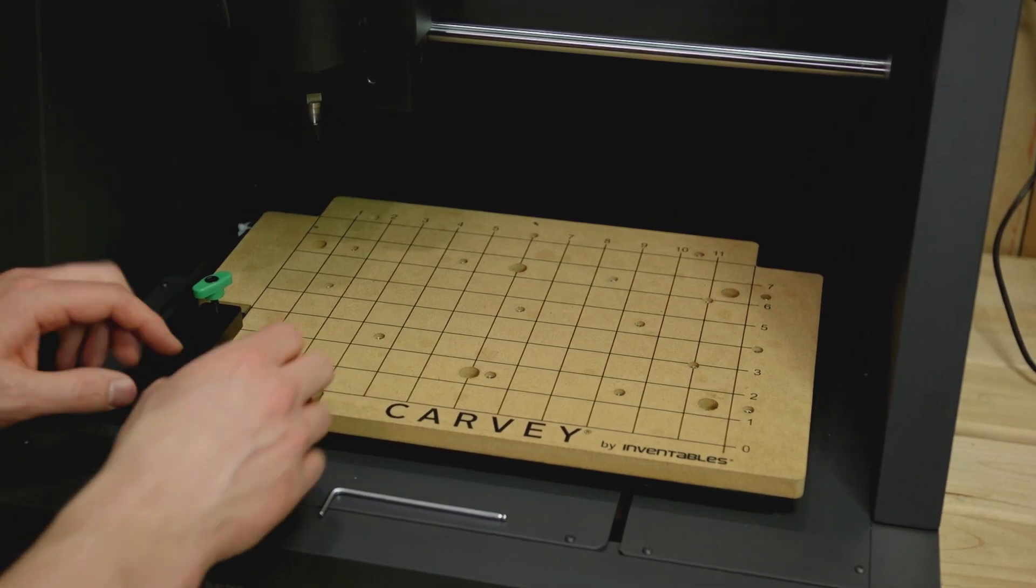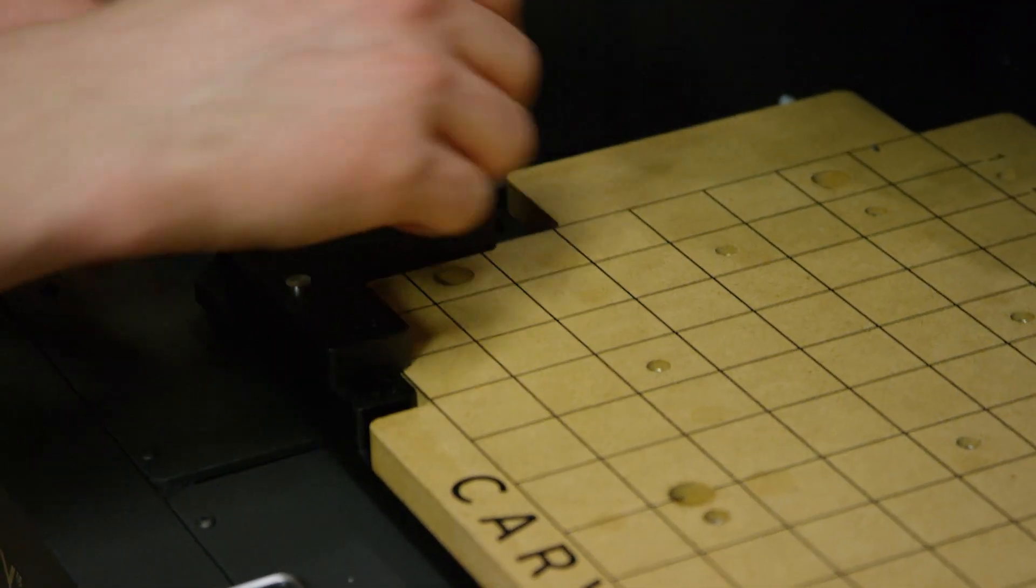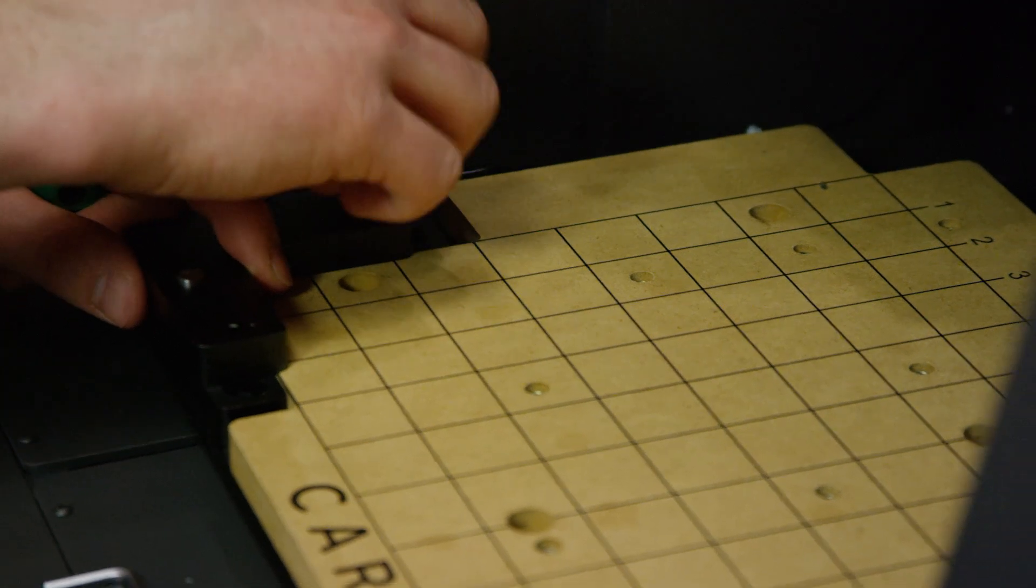The first thing we're going to do is unscrew the thumb screws from the smart clamp and put it off to the side.